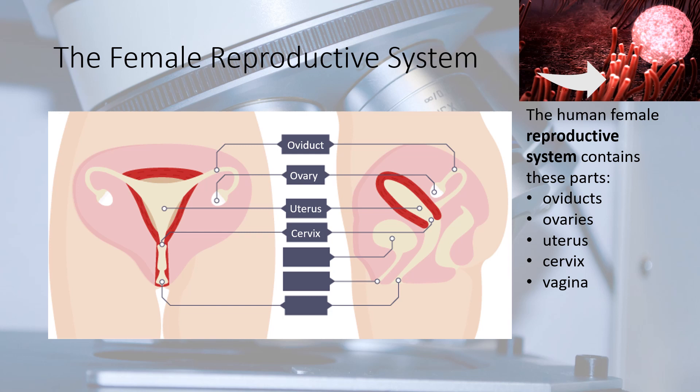The uterus, also called the womb, is a muscular bag with a soft lining. The uterus is where a baby develops until its birth. The cervix is a ring of muscle at the lower end of the uterus. It keeps the baby in place while the lady is pregnant.